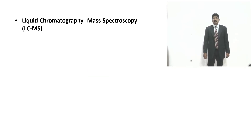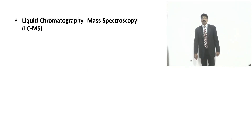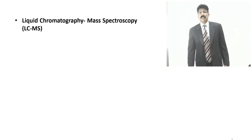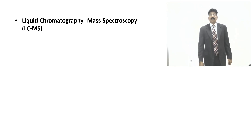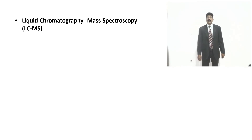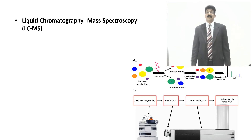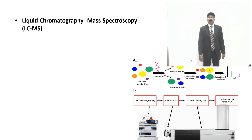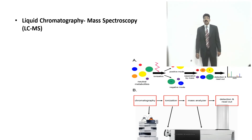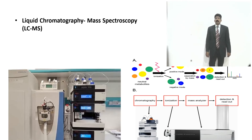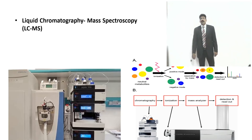Liquid chromatography connected with mass spectroscopy (LC-MS): after the compound is separated by liquid chromatography, it enters the ionization chamber, gets ionized, and can be identified by the detector. The ionized molecules are detected in mass spectroscopy by identifying their mass. This is a very good instrument — HPLC connected with mass spectroscopy is highly applicable for standardization of herbal formulations and herbal drugs.